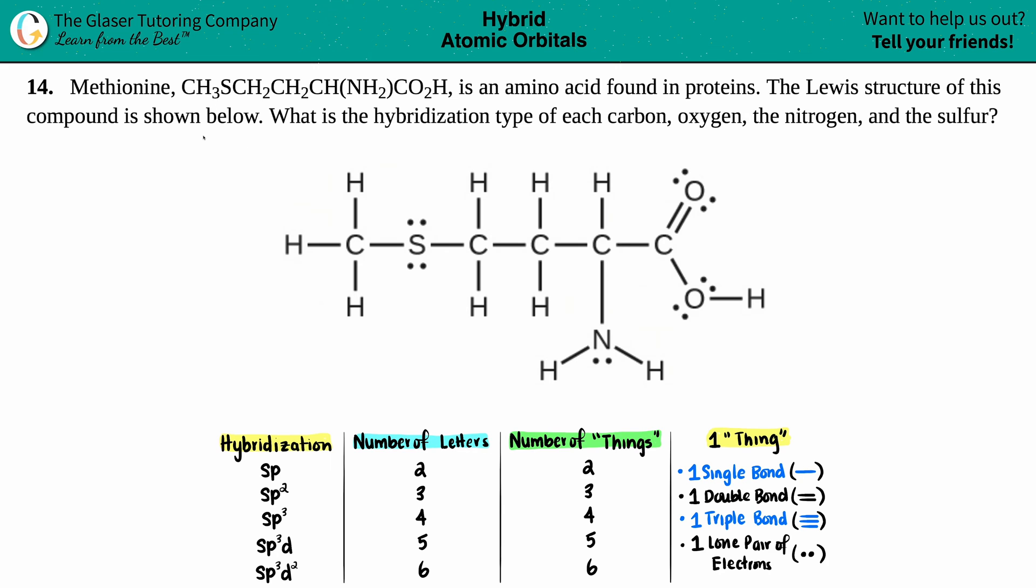Number 14, methionine, which is CH3SCH2CH2CHNH2CO2H, is an amino acid found in proteins. It's one of our 20 amino acids, essential amino acids. The Lewis structure of this compound is shown below.